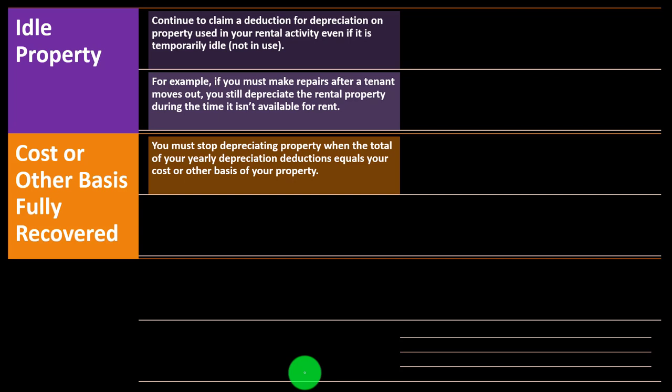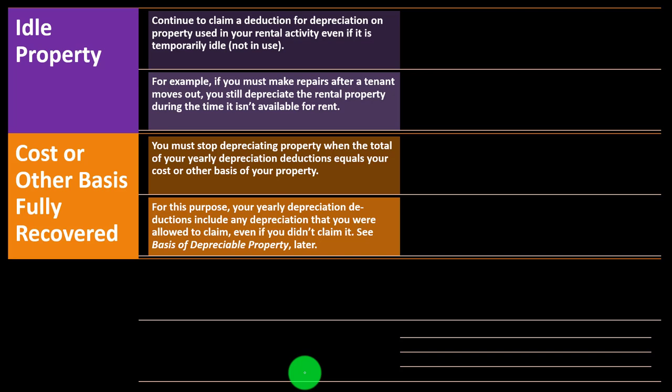Cost or other basis fully recovered: you must stop depreciating property when the total of your yearly depreciation deductions equals your cost or other basis. Depreciation represents the allocation of the cost or basis over the useful life — or whatever time frame the government forces us to use. Once we've allocated the cost, we cannot keep depreciating past the actual cost. If it costs $300,000, we can't depreciate $350,000 over the life of the home. Your yearly depreciation deductions include any depreciation you were allowed to claim even if you didn't claim it.